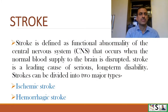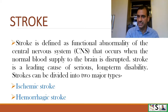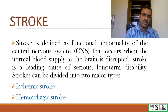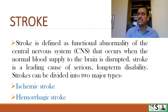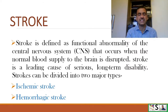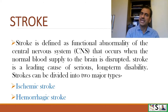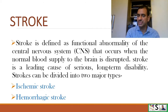What is stroke? Stroke is defined as a functional abnormality of the central nervous system that occurs when the normal blood supply to the brain is disrupted. Stroke is a leading cause of serious long-term disability because brain cells tend to die in this situation. Stroke can be divided into two major types: ischemic stroke and hemorrhagic stroke.